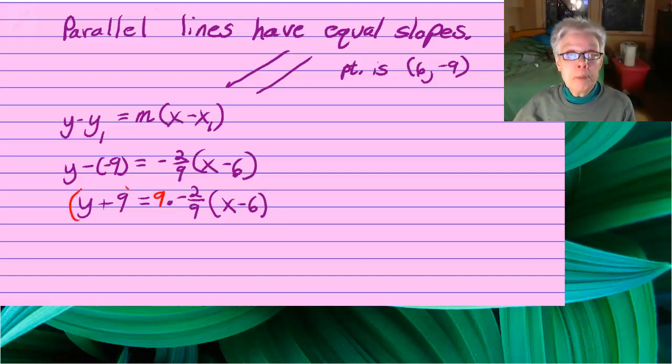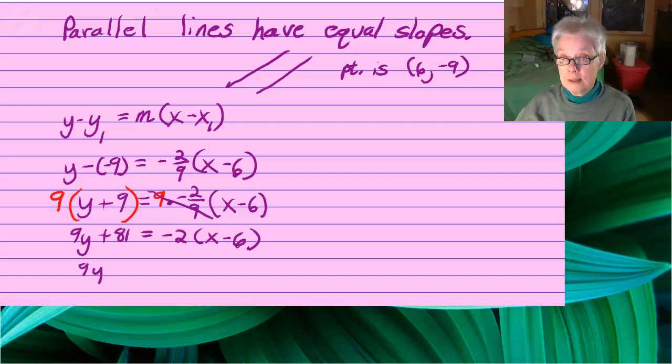I'm going to multiply both sides of the equation by the denominator of the fraction slope. Now, I'll distribute on the left, 9y plus 81. I'll cancel on the right, and that will give me negative 2 times x minus 6.